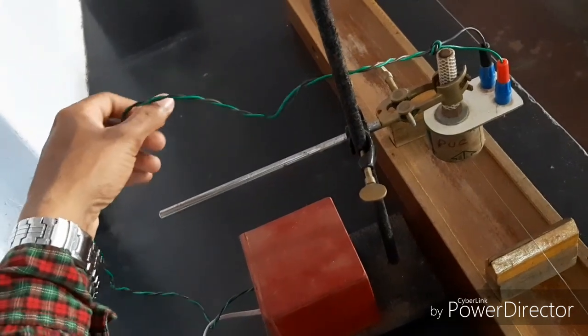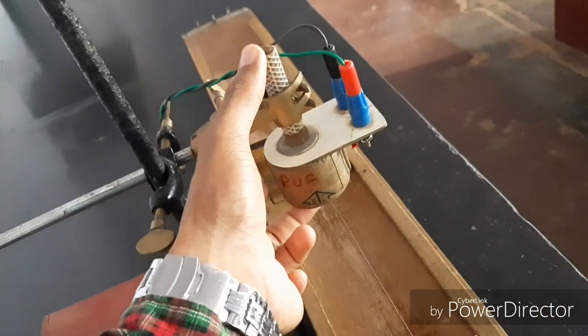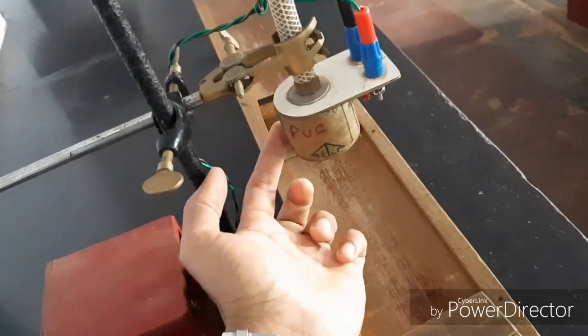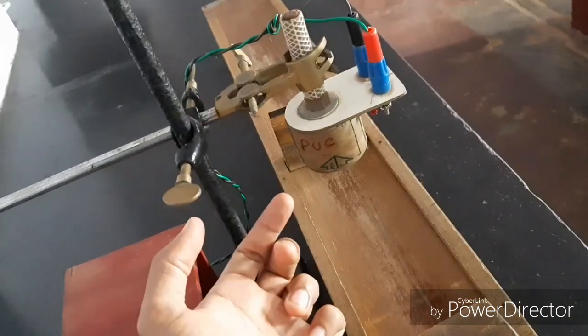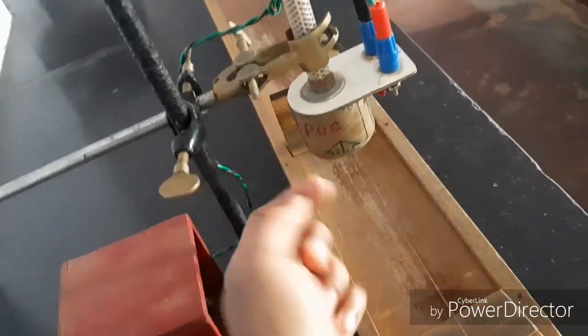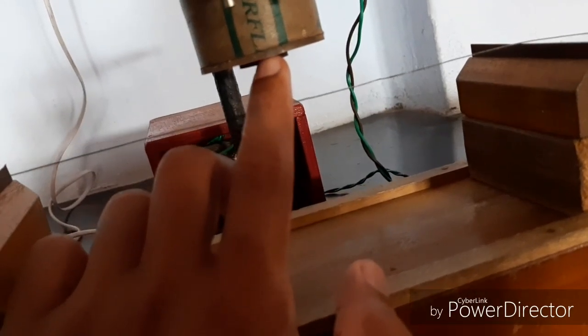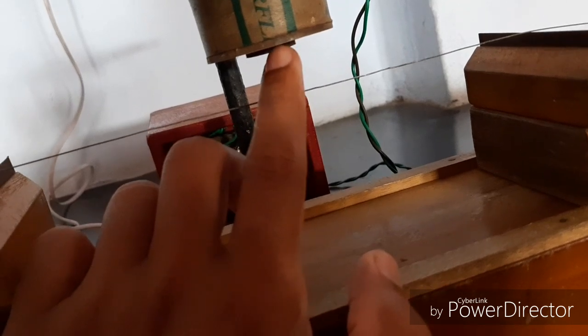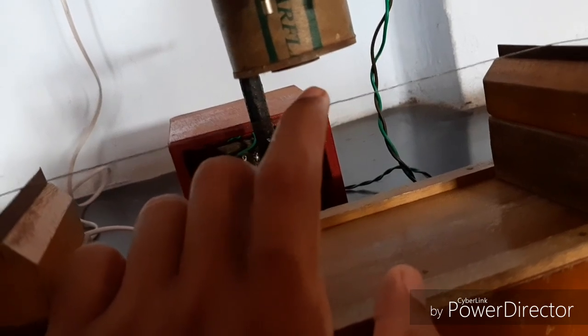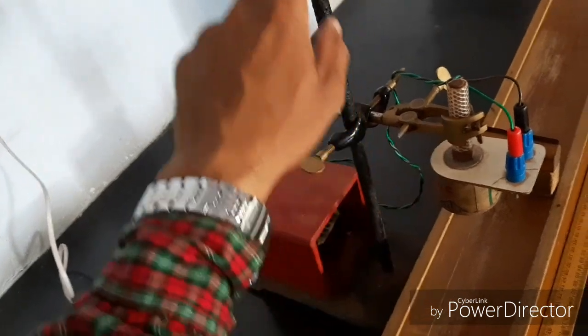Electromagnet consists of iron core wound by copper wire. Whenever current flows through this coil, this iron core behaves like a magnet. This electromagnet applies attractive force for every half cycle of applied AC. Because of this force, sonometer wire starts to vibrate. This electromagnet is fixed using this clamp stand.